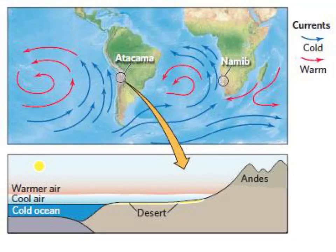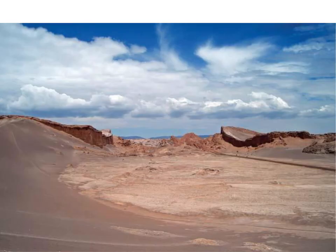Pictures are worth a thousand words. Here you can see that cold water ocean current with blue arrows coming up along the west coast of South America, and right in that crook is the Atacama Desert. And that's what it actually looks like — a pretty dry location. We're going to get into desert landscapes on Monday.